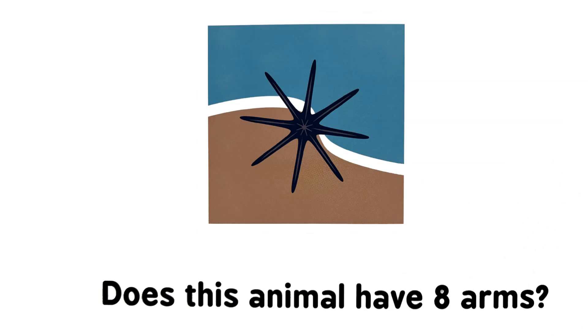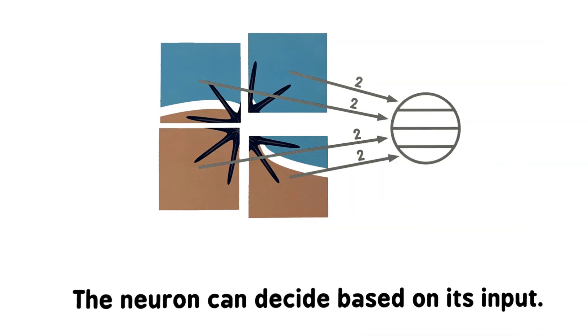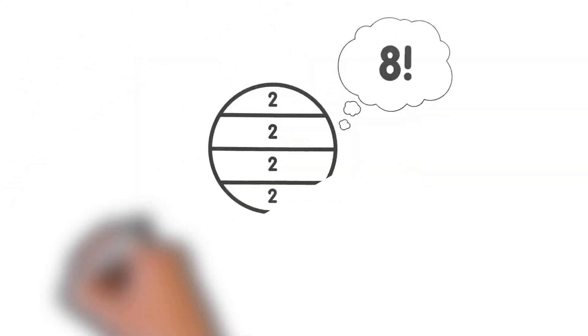Does this animal have eight arms? The neuron can decide based on its input. When the neuron has an answer.